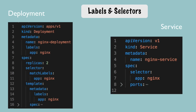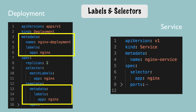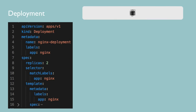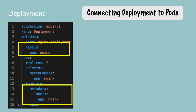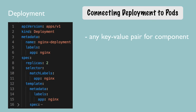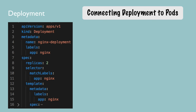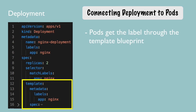The way the connection is established is using labels and selectors. The metadata part contains labels and the specification part contains selectors. In metadata, you give components like deployment or pod a key-value pair — any key-value pair you think of. In this case we have `app: nginx` and that label sticks to that component. We give pods created using this blueprint the label `app: nginx`, and we tell the deployment to connect or match all the labels with `app: nginx` to create that connection. This way the deployment knows which pods belong to it.